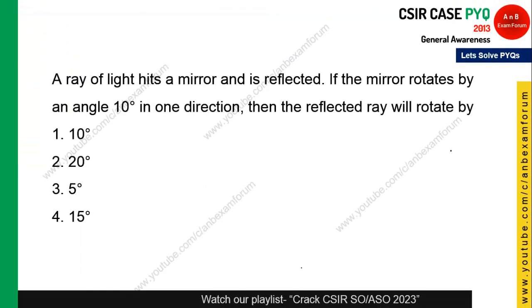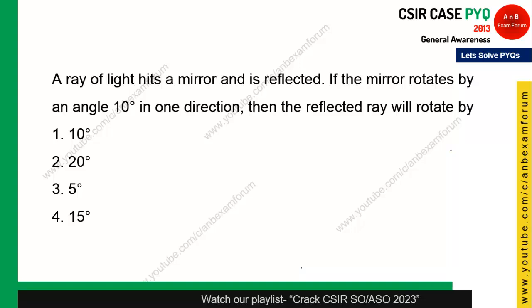The first question is on your screen and your time starts now. This question is from General Science, more precisely optics. The question says: a ray of light hits a mirror and is reflected. If the mirror is rotated by 10 degrees in one direction, then the reflected ray will be rotated by what?